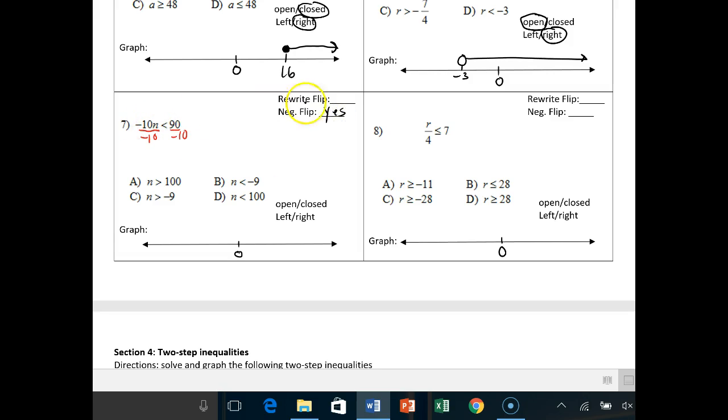Do I need a rewrite flip? No, because my variable is on the left-hand side. I'm reading it left to right. So these cancel off. I get 10 is now greater than, sorry, not 10, my fault. N is greater than negative 9. Notice again the flip in my inequality sign. So C is your answer.